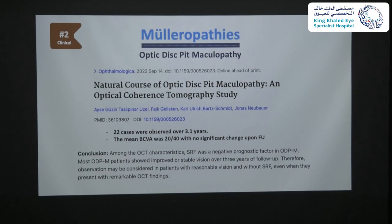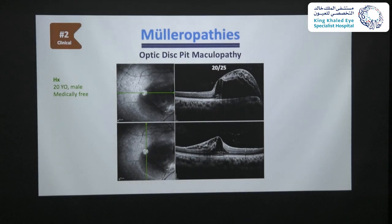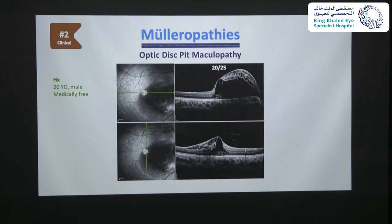A study published last month on the natural history of optic pit maculopathy included 22 patients observed for three years. VA at baseline and final follow-up did not significantly change. They concluded that when vision is good and subretinal fluid is absent, observation may be considered even when there are remarkable OCT findings. Going back to our patient with good vision and no subretinal fluid, we opted to observe — but he came one month later with VA of 20/40 and subretinal fluid, and was subsequently operated.